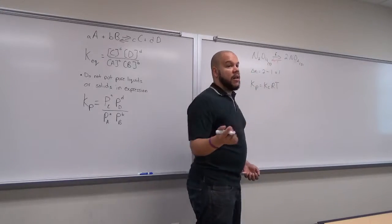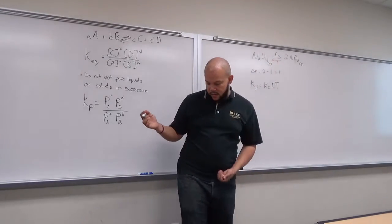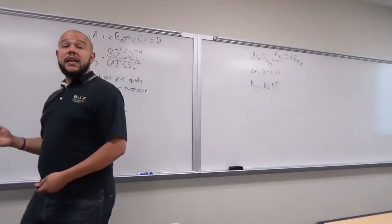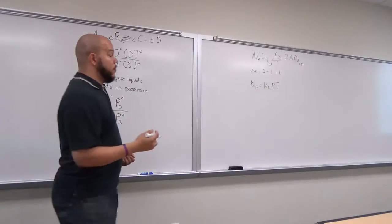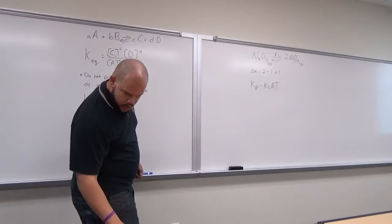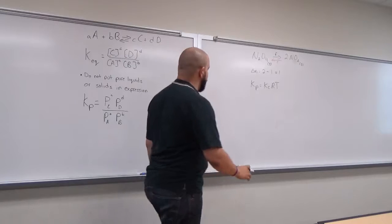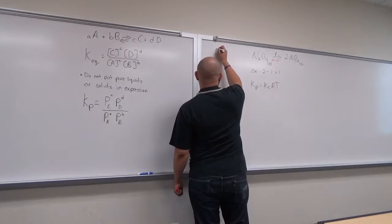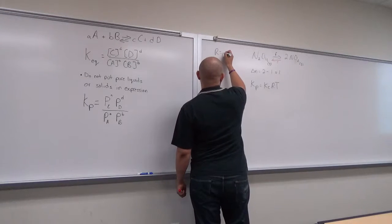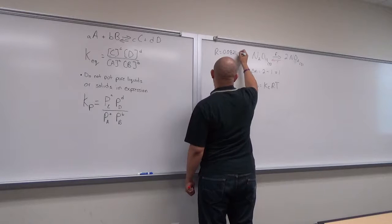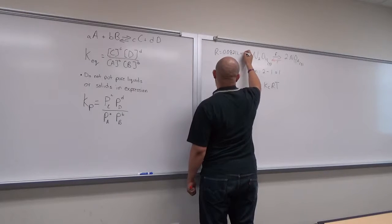R is the gas constant, and you're going to want to use 0.0821 liter·atmosphere per Kelvin·mole.